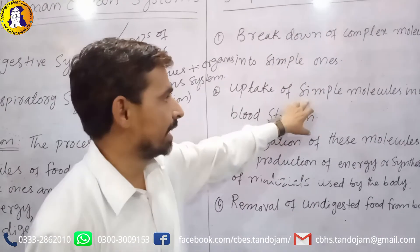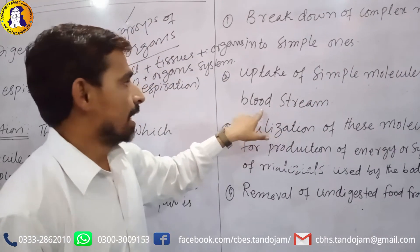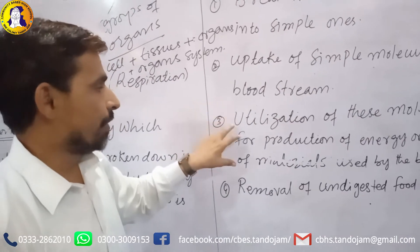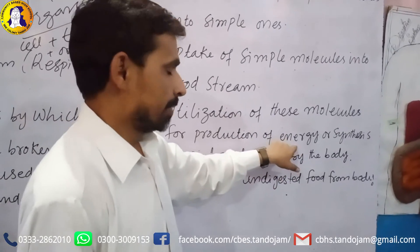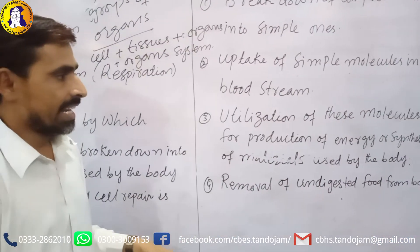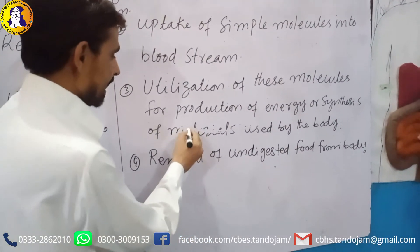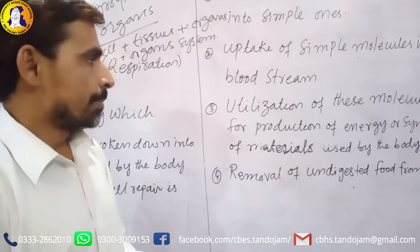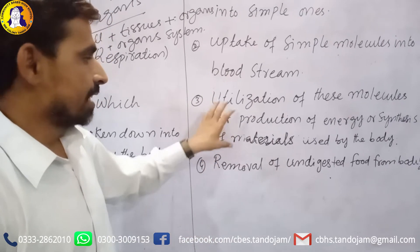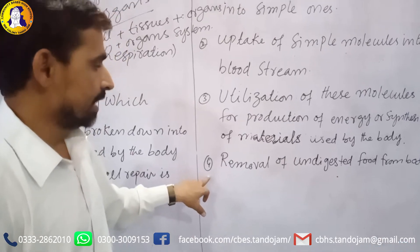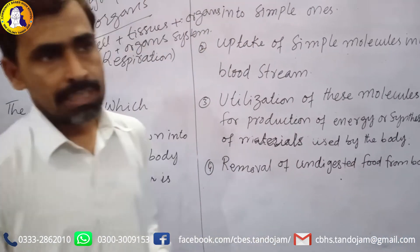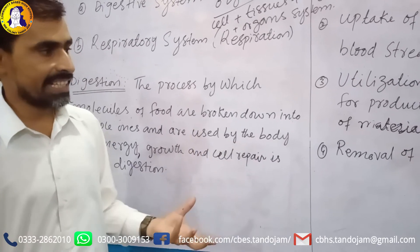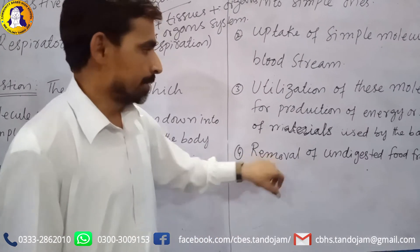When food is digested into simple molecules, those molecules are absorbed into the bloodstream and distributed throughout the body. The last step is the removal of undigested food from the body. Food molecules that are not digested are removed as waste material — urea, uric acid, or ammonia.